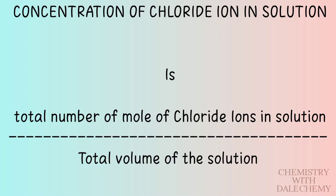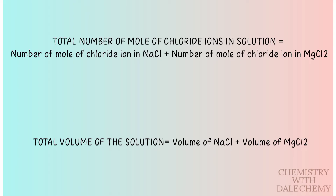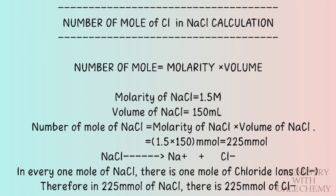Concentration is the amount of solute dissolved in a unit volume of solution. So the concentration of chloride ion in solution is equal to the total number of moles of chloride ion in solution divided by the total volume of solution. To get the number of moles of chloride ion in sodium chloride, we have to know the number of moles of sodium chloride itself.